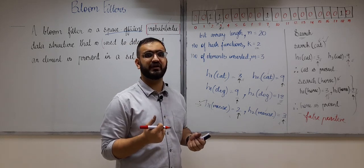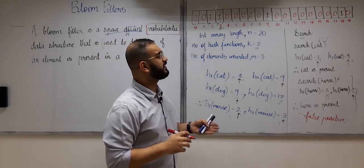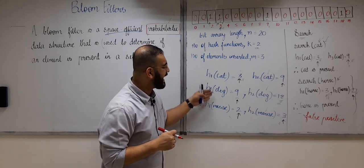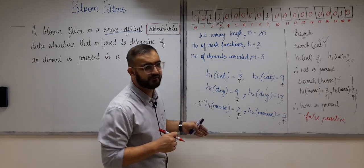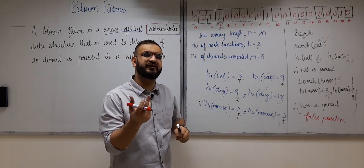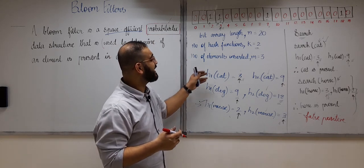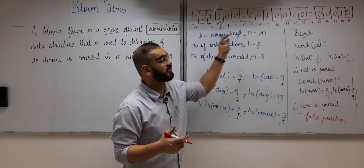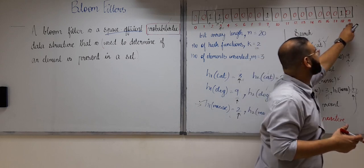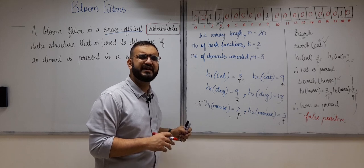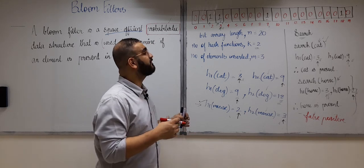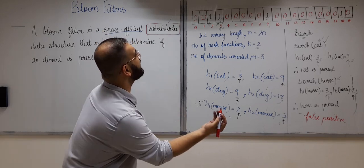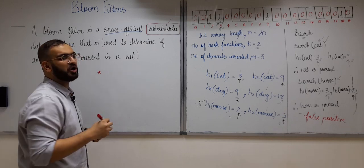A bloom filter may give some false positive results — consider that a drawback. But what are its advantages? One clear advantage is that bloom filter is space-efficient. We inserted cat, dog, and mouse but never stored these entire words — we just changed some bits. The bit array length is always fixed no matter how many elements we insert.